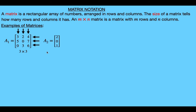Here's another example. This matrix has three rows: the first row contains the single element 2, the second row the single element 0, and the third row the single element 1. This matrix has only one column containing 2, 0, 1. So since it has three rows and one column, this is a 3 by 1 matrix.